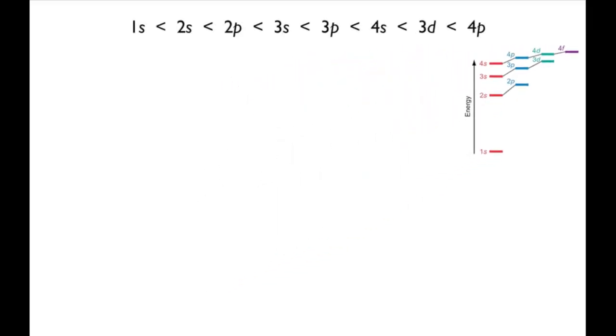In order to work out the electronic configuration of an atom, you need to know its atomic number. Iron, for example, has an atomic number of 26, so there are 26 electrons in each iron atom.